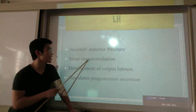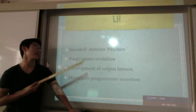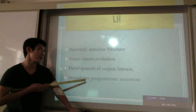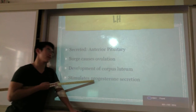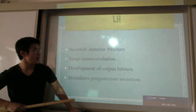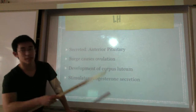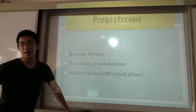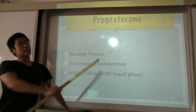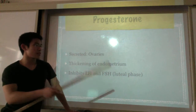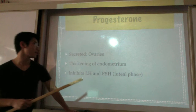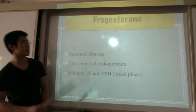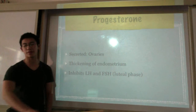LH is secreted by the anterior pituitary gland as well. This surge causes ovulation, and it also develops the corpus luteum and stimulates progesterone secretion. Progesterone is secreted by the ovaries, as shown before. It causes a thickening of the endometrium and inhibits LH — characteristic of the luteal phase.